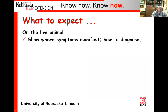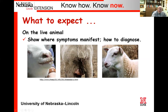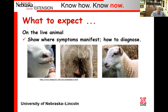On the live animal, maybe have them show where the symptoms manifest, show us how to diagnose. I pulled off three pictures here. For example, this happens to be sore mouth — basically, around the mouth, you get a lot of sores that start to develop. They could show us exactly where they would look and what they're looking for. The second picture is mastitis — if you have a lactating ewe, they could feel up underneath. They're feeling for hardness in the udder, feeling for warmth because there's going to be an infection causing an elevated temperature. This last one we don't have listed, but that's actually a goiter in the neck region.